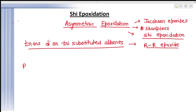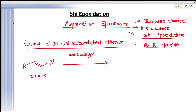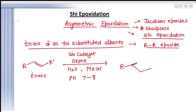So what is happening here? Suppose this is our alkene — an unfunctionalized trans alkene. When this trans alkene is treated with Shi catalyst in the presence of oxone, H₂O, and methyl cyanide (acetonitrile), and when the pH is between 7 to 8, then this alkene gets oxidized to an epoxide. The stereochemistry is very important because here you are getting an RR-type product, and this is the only product you are getting.